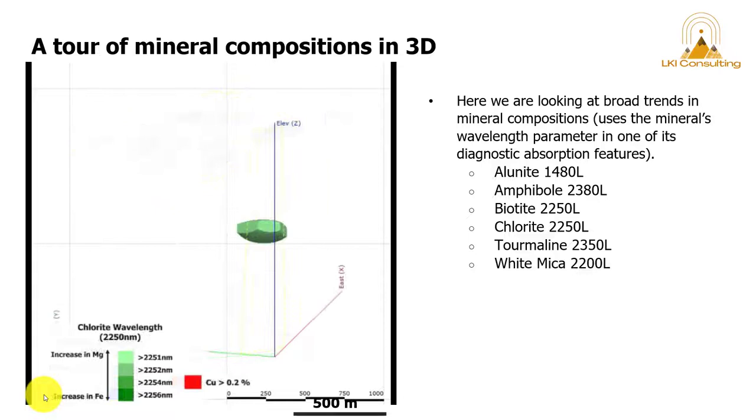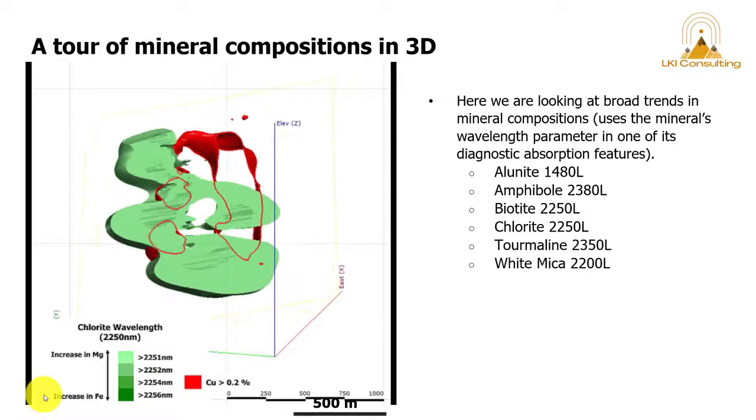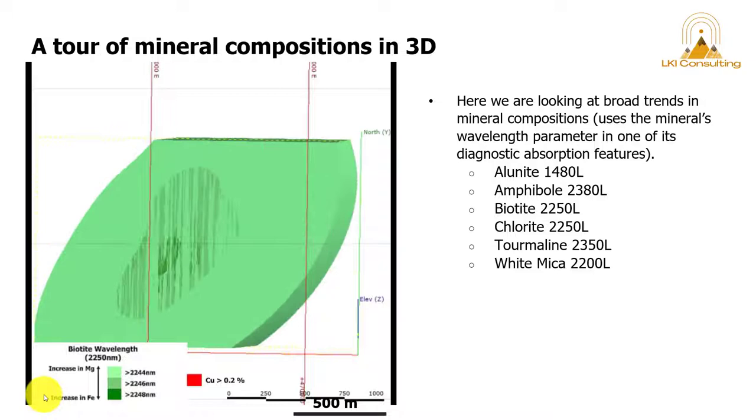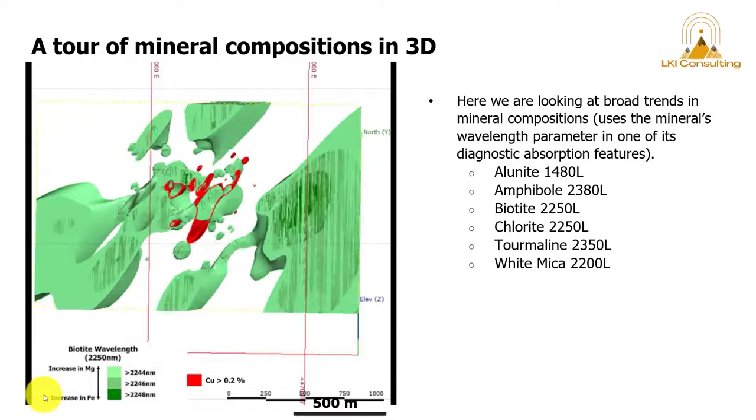This is the cross section of the amphibole wavelength. Here we're looking at chlorite 2250 nanometers. Superimposed there in red is the copper greater than 0.2%.